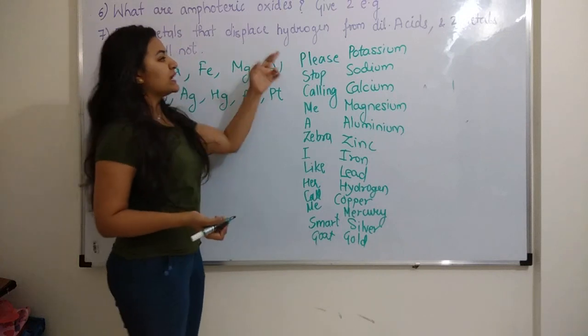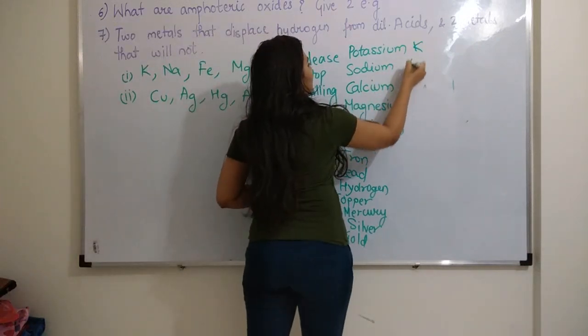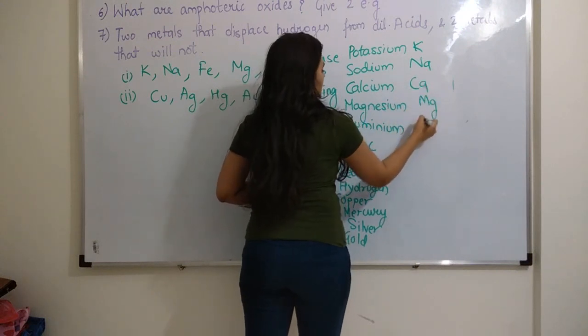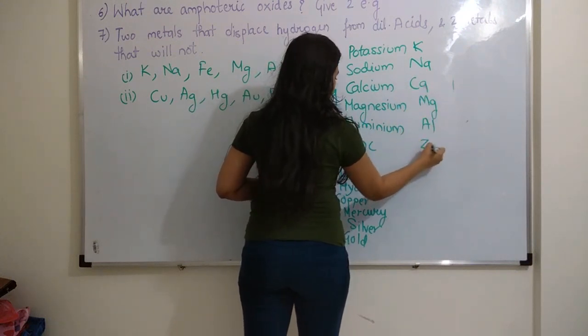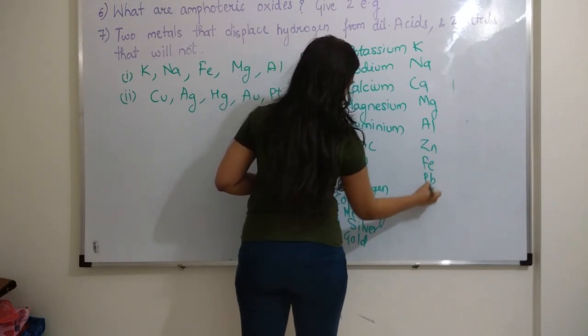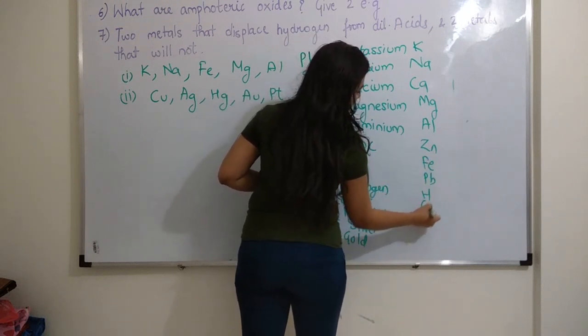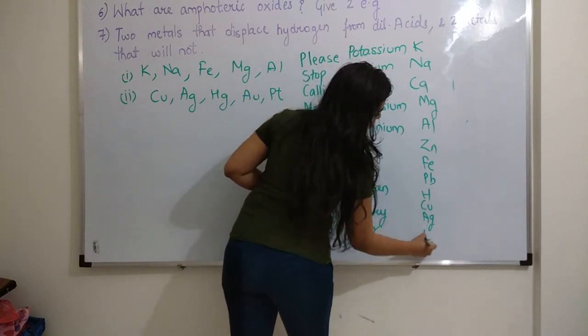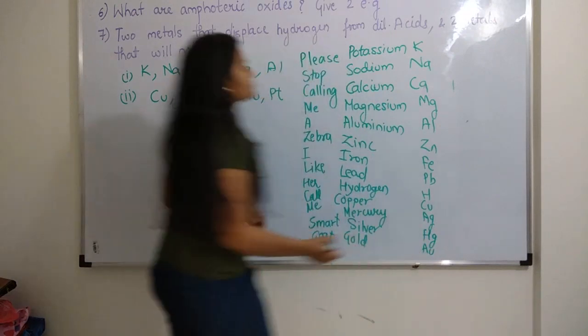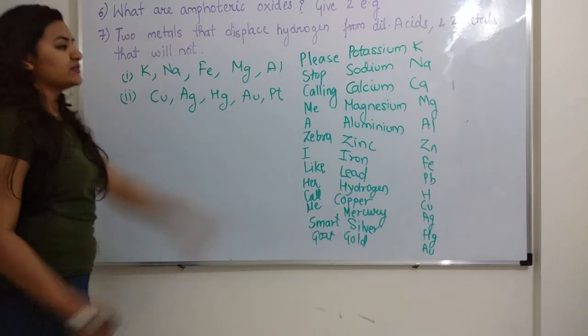So potassium, I'll write the symbols as well. Here: K, Na, Ca, Mg, Al, Zn, Fe, Pb, H, Cu, Hg, Ag, Au, and then Pt. Alright, so that's the reactivity order.